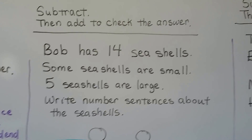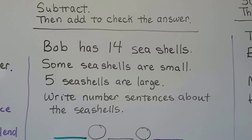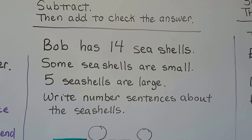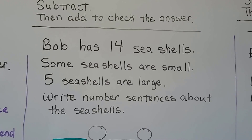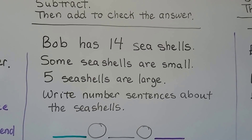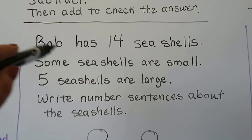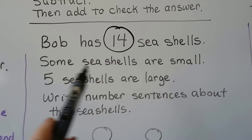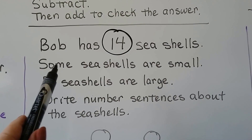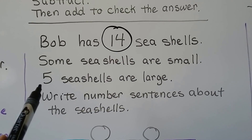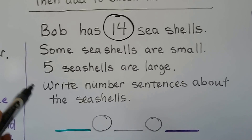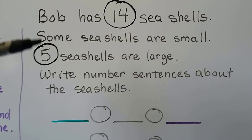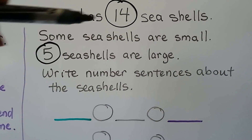Subtract, then add to check the answer. Bob has fourteen seashells. Some seashells are small and five seashells are large. Write the number sentences about the seashells. We know he has fourteen in all. Some are small but we don't know how many. Five are large. How do we find how many are small? We need to find the difference between five and fourteen.